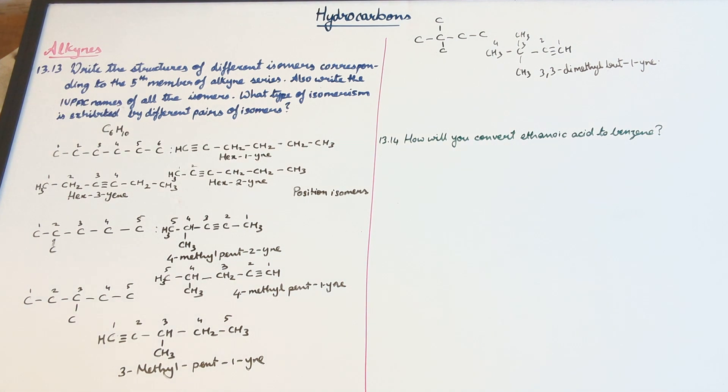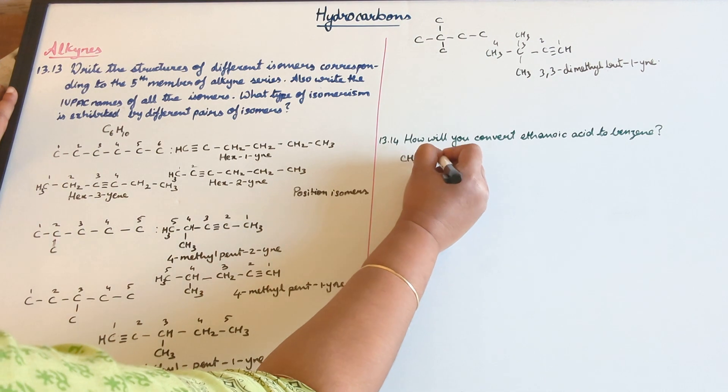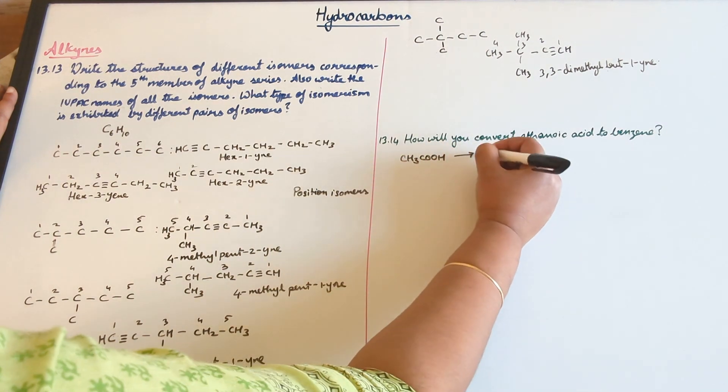The next one is how will you convert ethanoic acid to benzene? Now this particular question basically compiles all the preparation, all the chemical reactions that you've learnt in this chapter. So we need to convert ethanoic acid which is CH3-COOH to benzene.